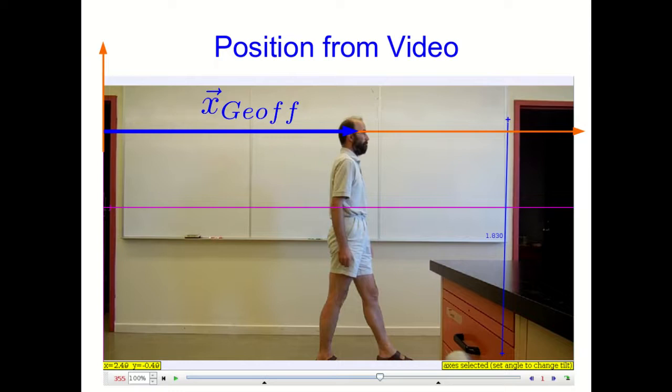Now, what we're going to graph is going to be technically the x component of the position vector. But for a motion in a straight line like this, that's really not difficult to see. And we'll talk more about components later. So now all we need is the time. And the video analysis software tells us this is frame 355 of the video. And we should be able to use that to determine a time.